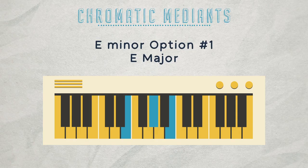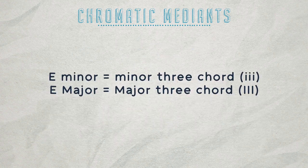The first chromatic mediant chord is an E major chord. This chord has the note G sharp, which is chromatic in the key of C major. If E minor is our minor three, then E major is our major three chord. Here's an example of how this sounds in a progression.